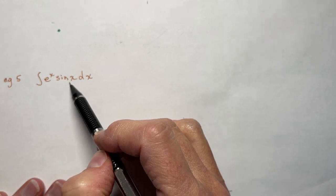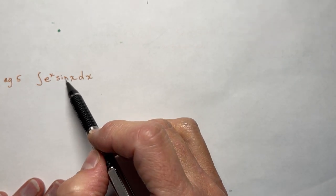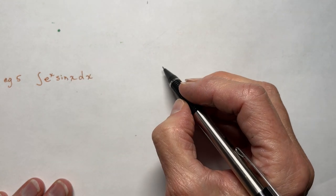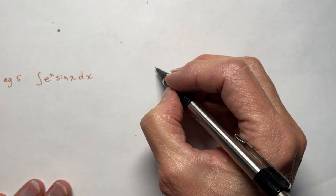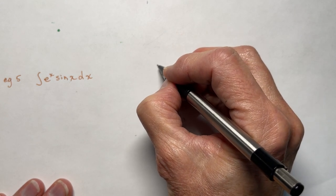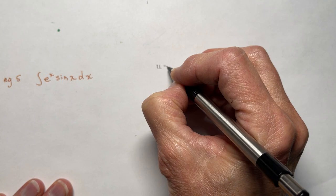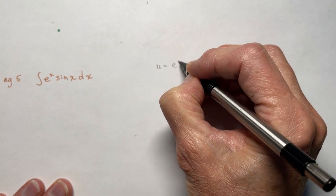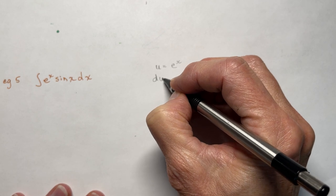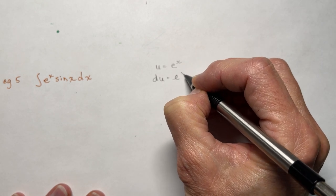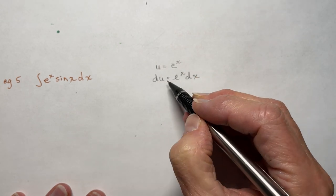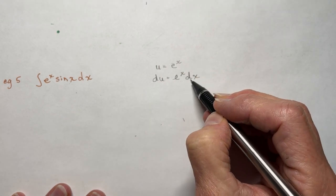With this one, it doesn't really matter which one you pick — I did it the other way around and it turned out just fine. But let's do it this way because it's straight in my mind. So I'm breaking my own rule here, but it'll still work. So I'm going to let u be e^x and dv be sin(x).